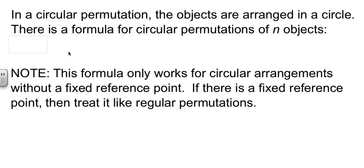Another kind of permutation is called the circular permutation. And as the name implies, things are arranged in a circle. If you have n objects that you're putting in a circle, then the formula is n minus 1 factorial.